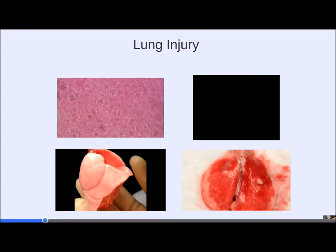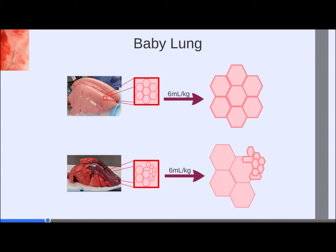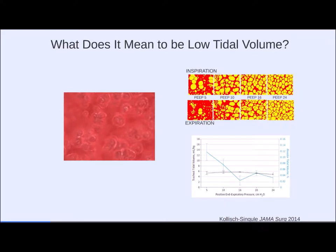The problem with the low tidal volume strategy is this: in a healthy lung, 6 cc/kg distributes homogeneously. But in an injured lung with open alveoli adjacent to collapsed ones, even 6 cc/kg can over-distend open alveoli while leaving collapsed alveoli unrecruited. So the remaining alveoli that are open can still be injured, while the collapsed ones never get a chance to recruit. Does 'low tidal volume' simply mean dialing in 6 cc/kg? The answer is no.